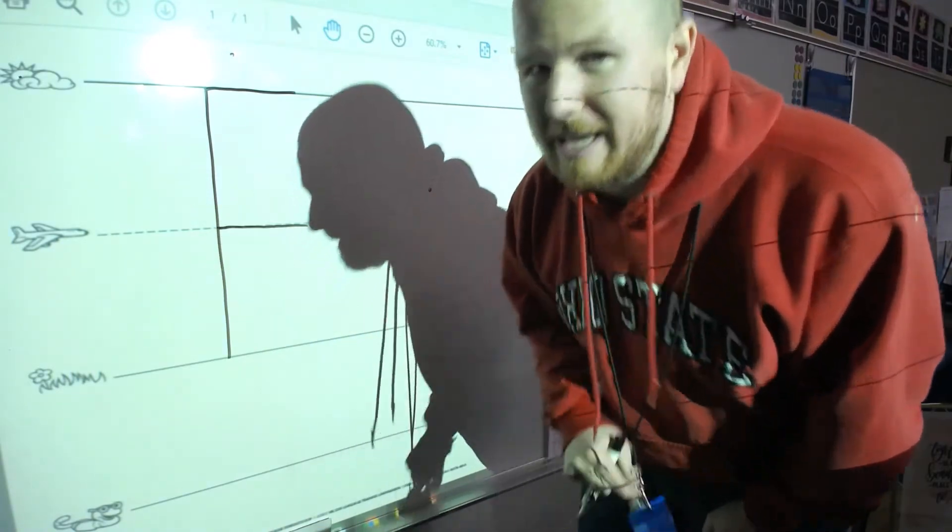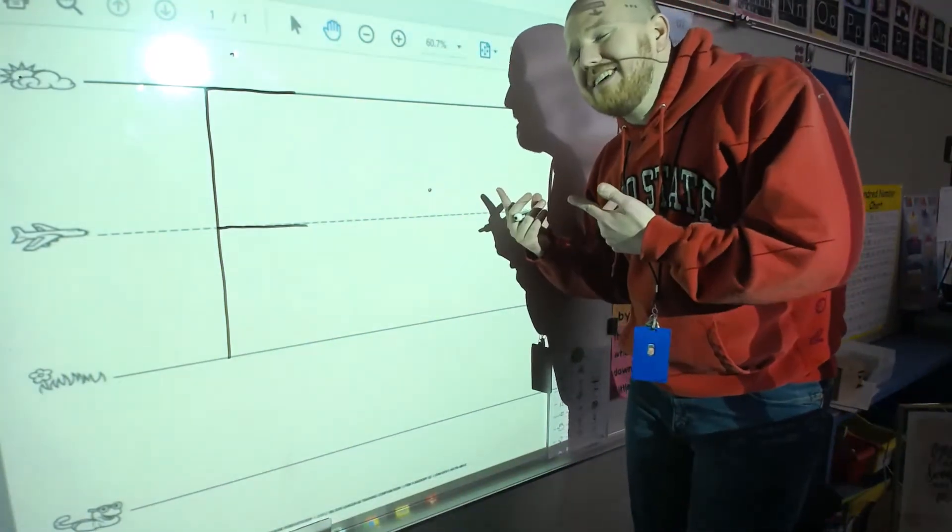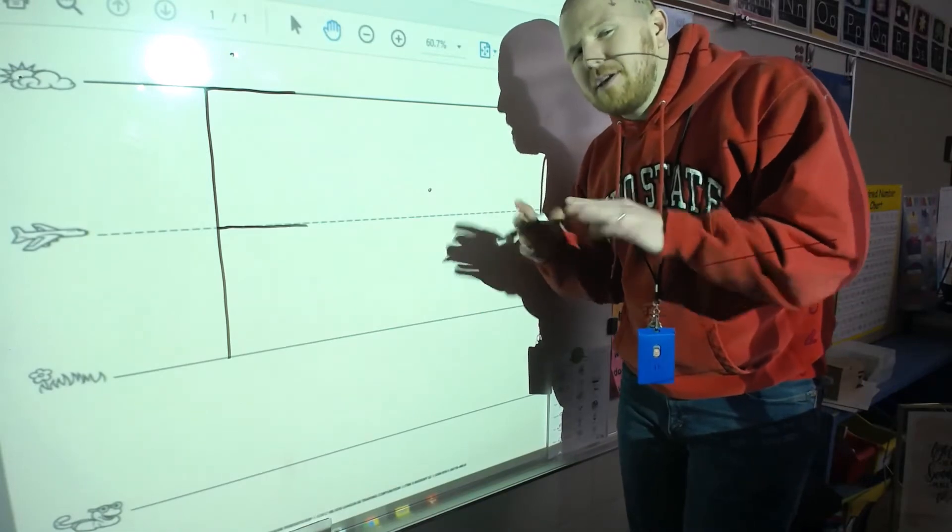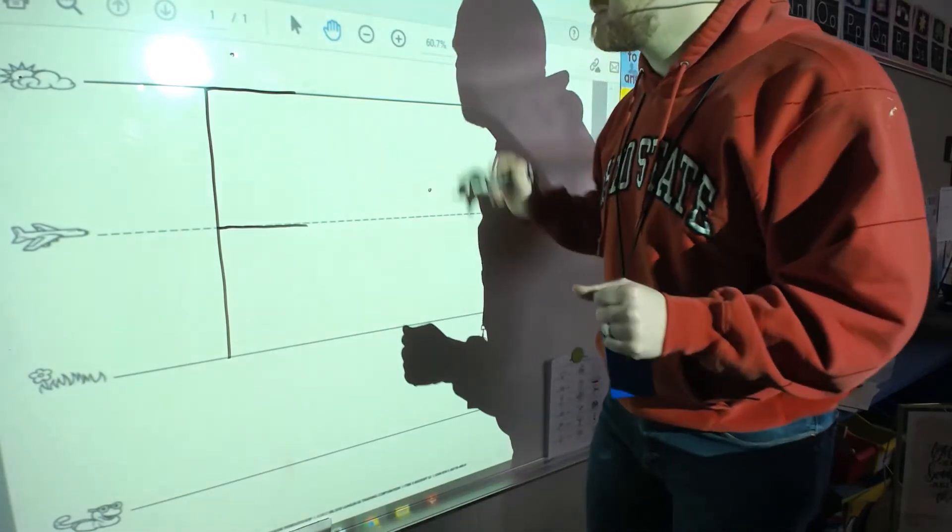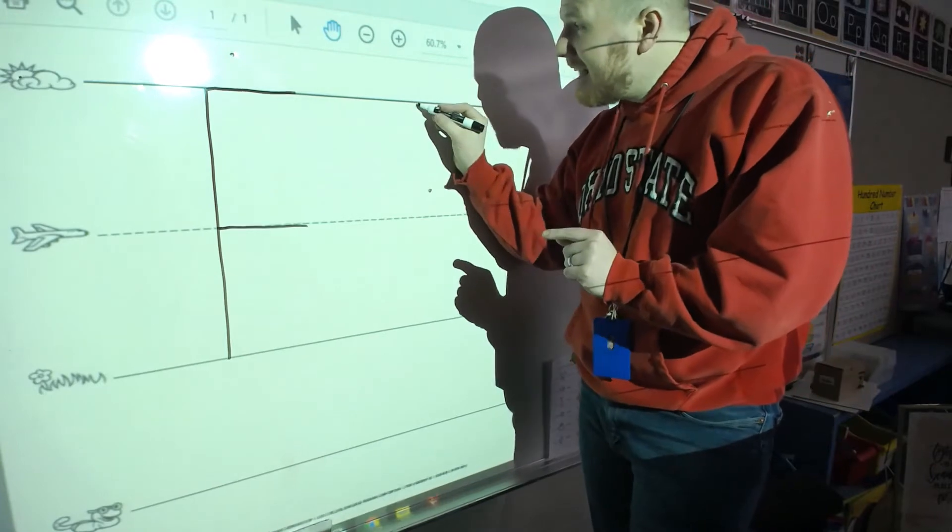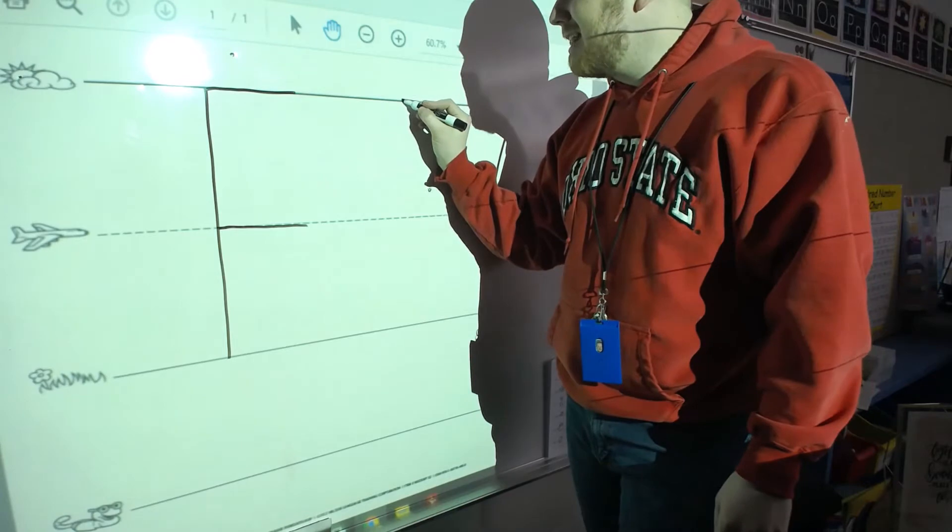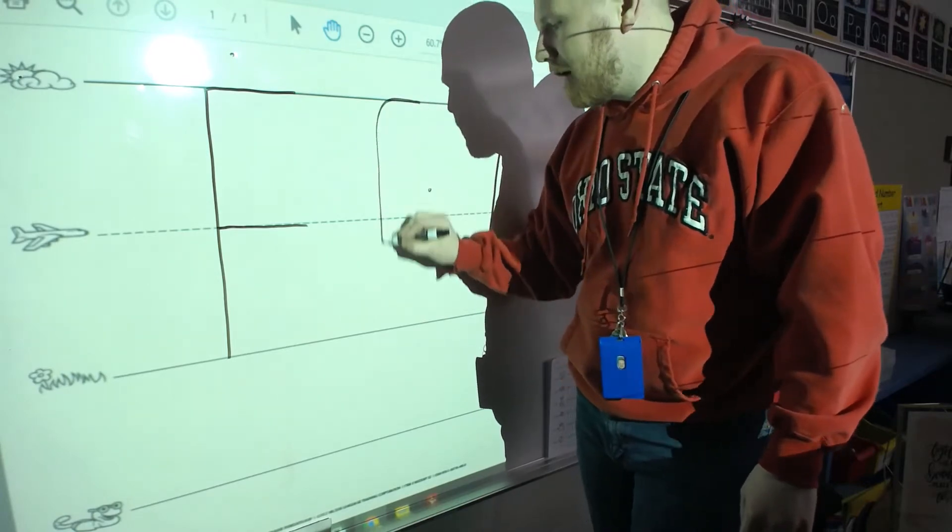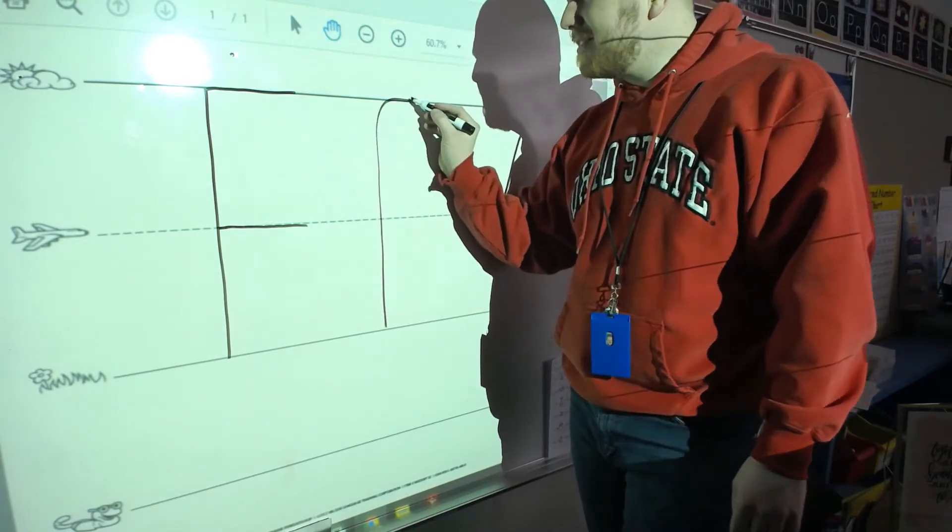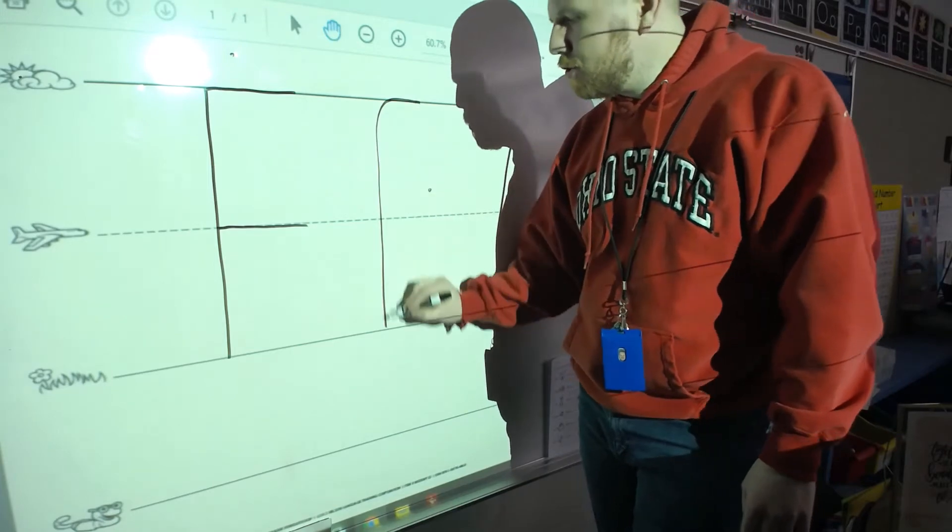Let's do the lowercase letter. Now the lowercase letter still starts at the skyline but you'll see how it's different. So we're gonna start at the skyline. Good. Then we're gonna come back on the skyline and down to the grass line.